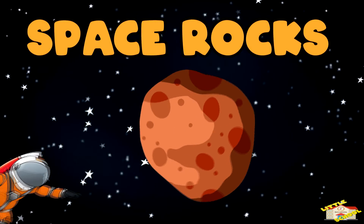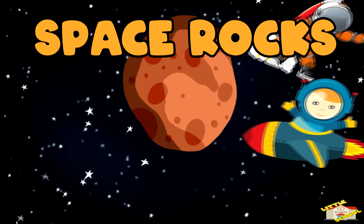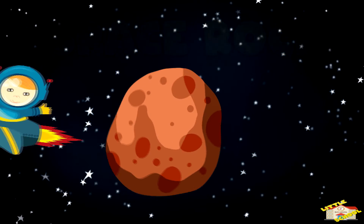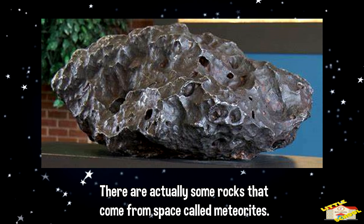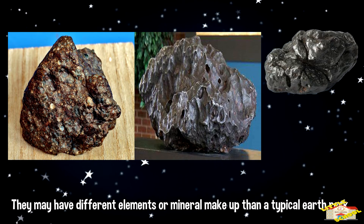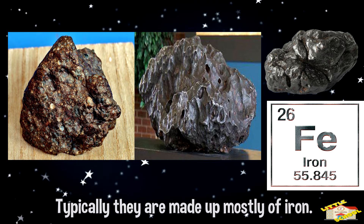Space rocks: there are actually some rocks that come from space, called meteorites. They may have different elements or mineral makeup than a typical earth rock. Typically, they are made up mostly of iron.